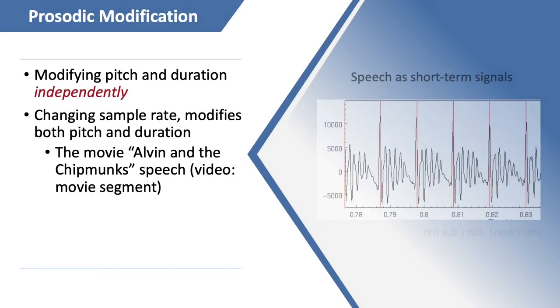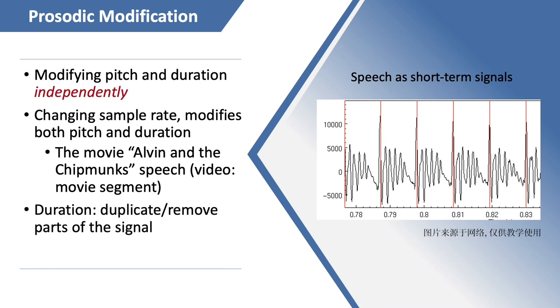To process the speech as short-term signals, duration can be modified by duplicating or removing parts of the signal. Pitch can be modified by resampling the short-term part. Prosodic modification based on pitch and duration modification can improve speech quality.